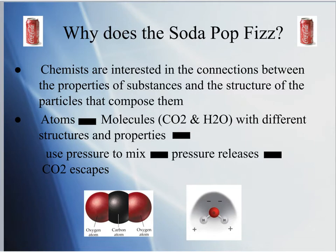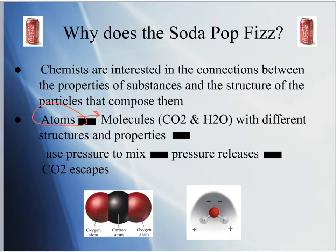If you remember from regular chemistry, everything is made from atoms — that is the smallest unit of matter. For example, if we're talking about the can of soda, carbon and oxygen atoms can combine to make the carbon dioxide that makes the soda fizz. Hydrogen and oxygen atoms can come together to make water, which is the solvent of this whole mixture.